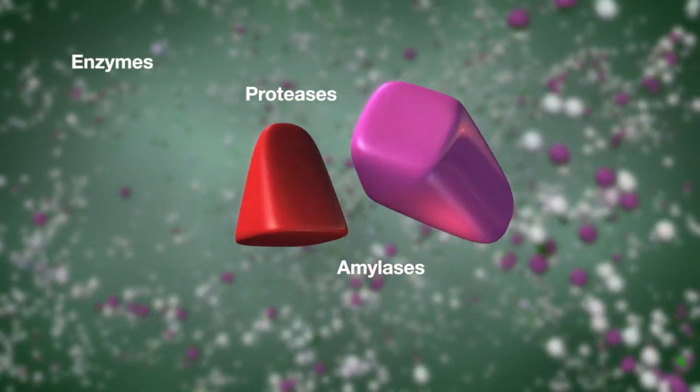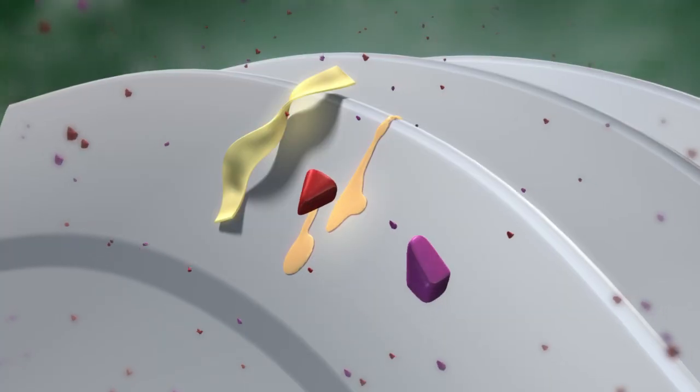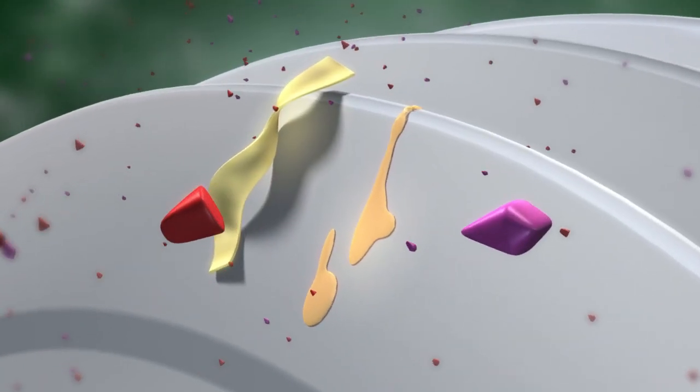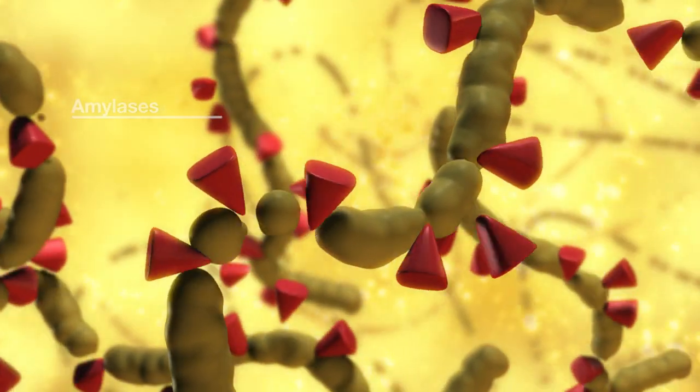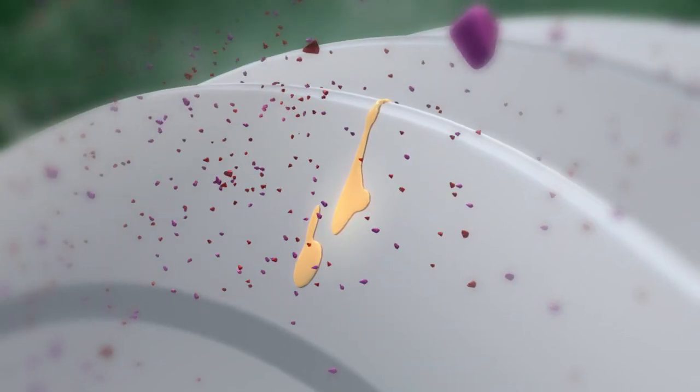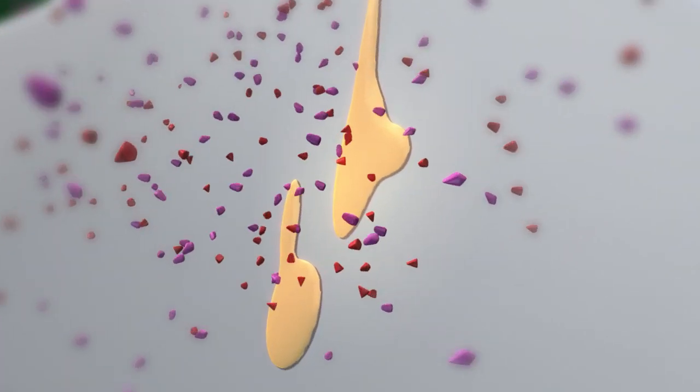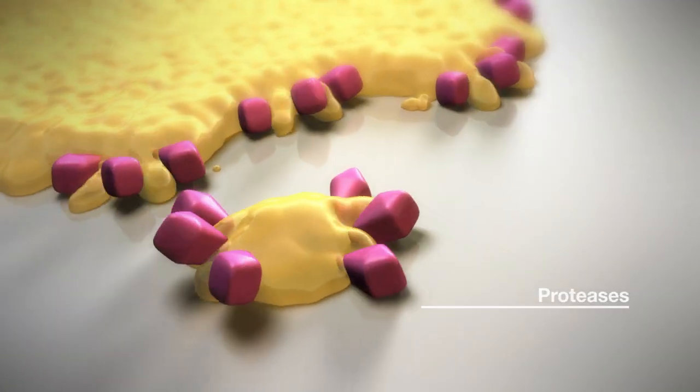Amylases and proteases are natural digestive enzymes. Amylases cleave the chain molecule starch into its components and thereby remove carbohydrate-containing food residues from dishes. Proteases do the same thing with proteins and deal effectively with sticky egg yolk and meat residues.